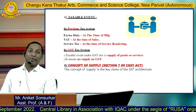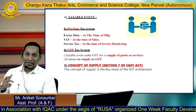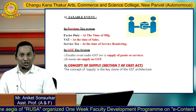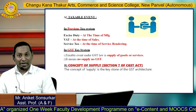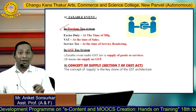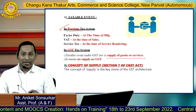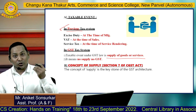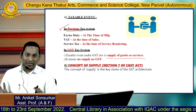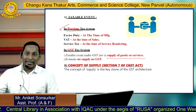Let us understand the meaning of taxable event. In the previous tax system, excise duty was charged at the time of manufacturing, VAT was charged at the time of sales, and service tax was charged at the time of service rendered. But under GST, the taxable event is the supply of goods or services — meaning when a supplier is liable to supply goods or services, GST will be charged. In short: no supply, no GST.